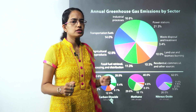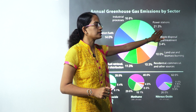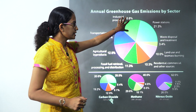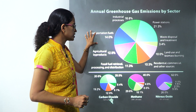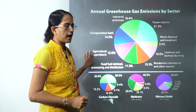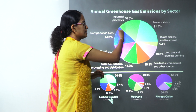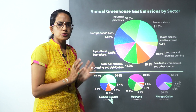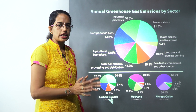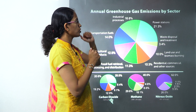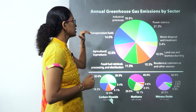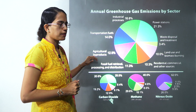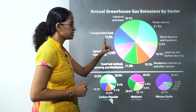The highest emission is caused by the power station, that's nearly 21%, followed by the industrial processes, the transportation fuels, and the agricultural byproduct. So that's the kind of order — sometimes you have a question on order. Highest contribution of greenhouse gas emission: power station, followed by industrial processes, followed by transportation fuel, and agricultural byproduct.